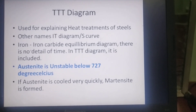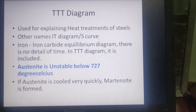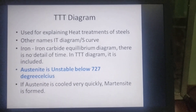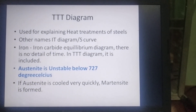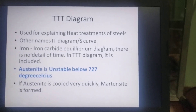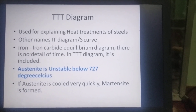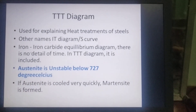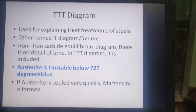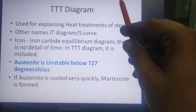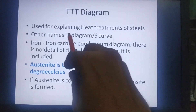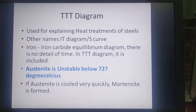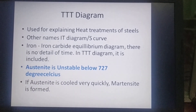This video is about the construction of the Time Temperature Transformation diagram, or TTT diagram. The TTT diagram is used for explaining the heat treatments of steels. Other names for the TTT diagram are IT diagram, isothermal transformation diagram, and S curve. It is called the S curve because the shape of the curve is S, and it is called the IT diagram because we are recording the isothermal transformation of austenite.